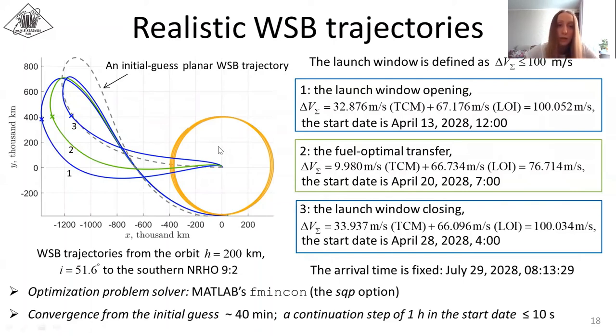One step of the continuation method took no more than 10 seconds. Here you can see realistic trajectories corresponding to the launch window with the total cost lower than 100 meters per second. The first trajectory corresponds to the launch window opening, the second trajectory is the fuel optimal one, and the third corresponds to the launch window closing. All trajectories are calculated for April 2028.